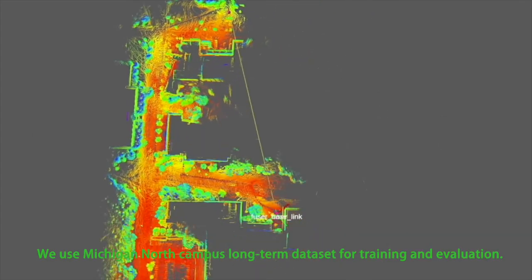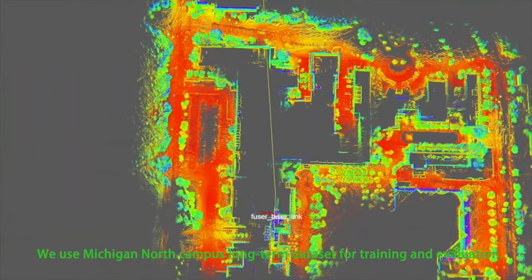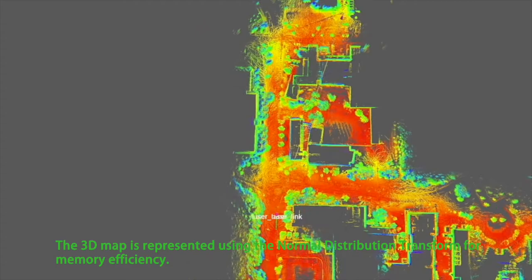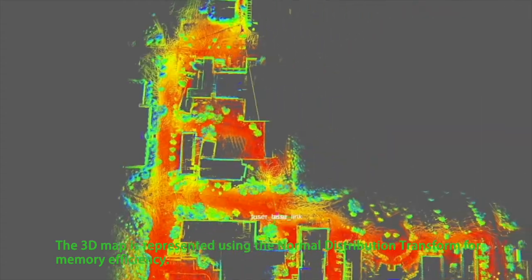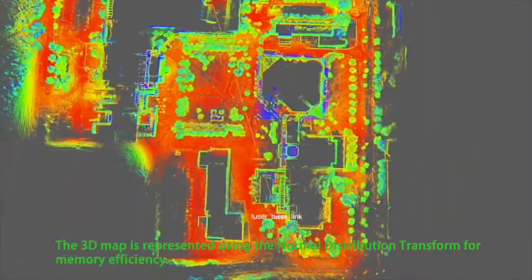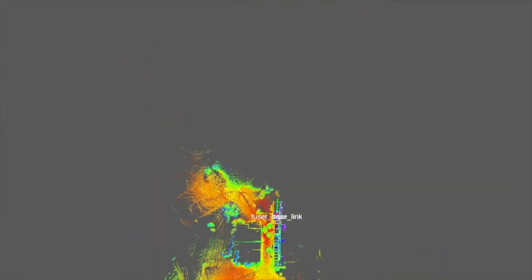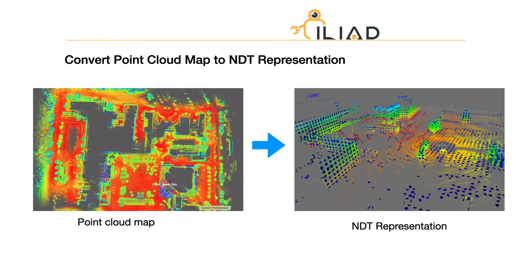We use Michigan North Campus long-term dataset for training and evaluation. We first build an accurate map of the environment using multi-session data. Multi-sensor fusion is used in mapping, however, only LiDAR data is used for relocalization. Then, we convert the point cloud map to normal distribution transform representation for memory efficiency.